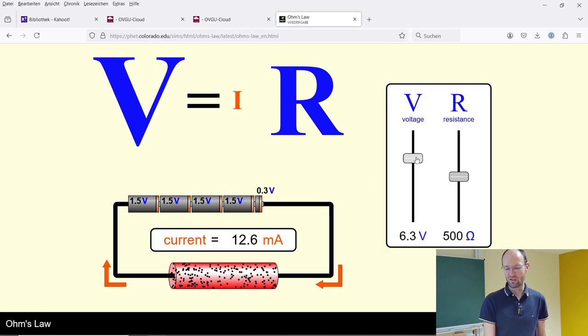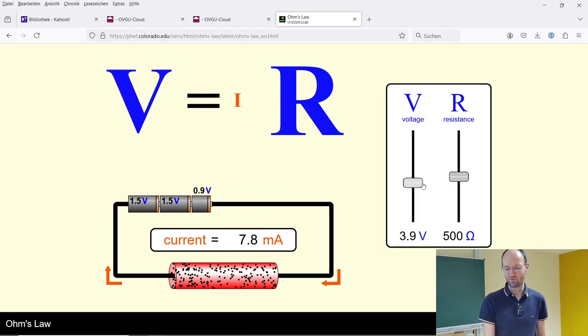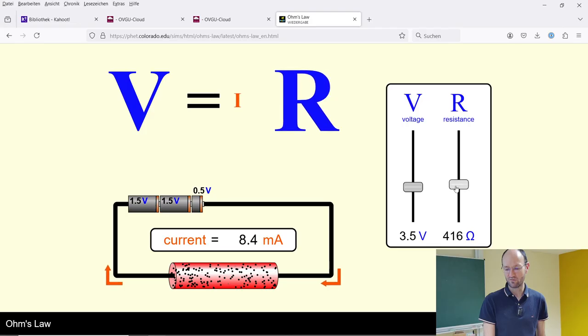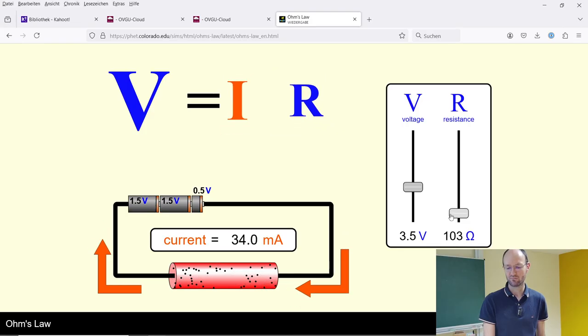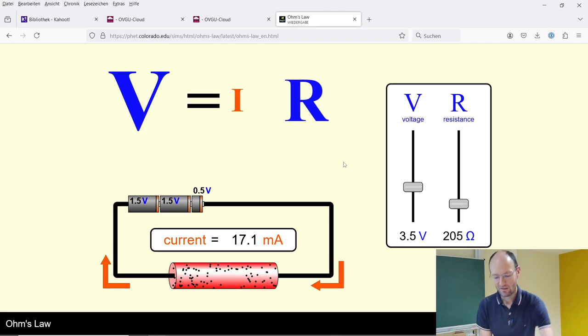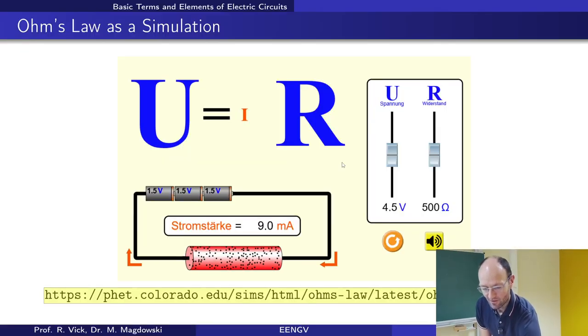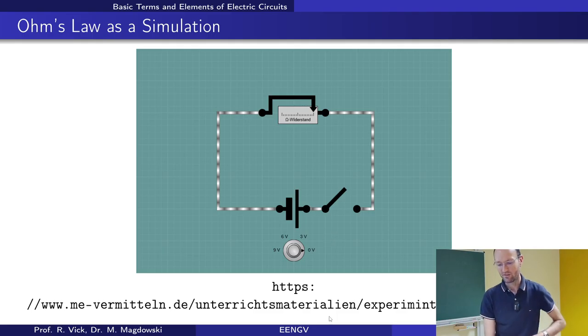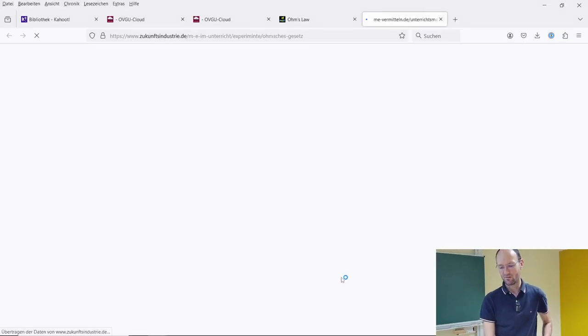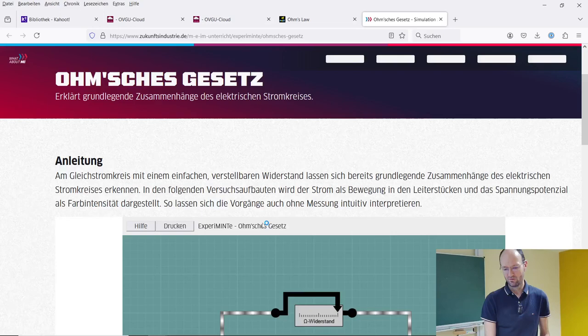And so here you can check: if you have more voltage you also get more current, and if you have less resistance you get more current and vice versa.